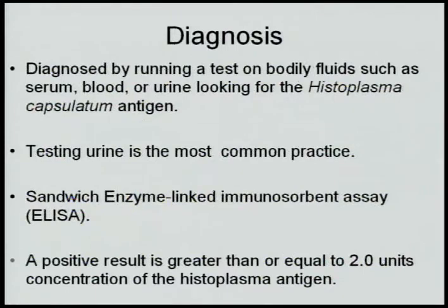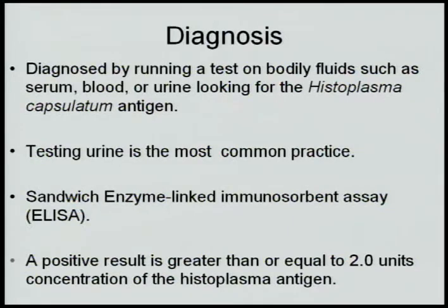It's diagnosed by running a test on body fluids, such as serum, blood, or urine, looking for the Histoplasma capsulatum antigen. Testing urine is the most common practice, and this is done using a sandwich enzyme-linked immunosorbent assay, otherwise known as an ELISA. A positive result is greater than or equal to 2.0 units concentration of the antigen.